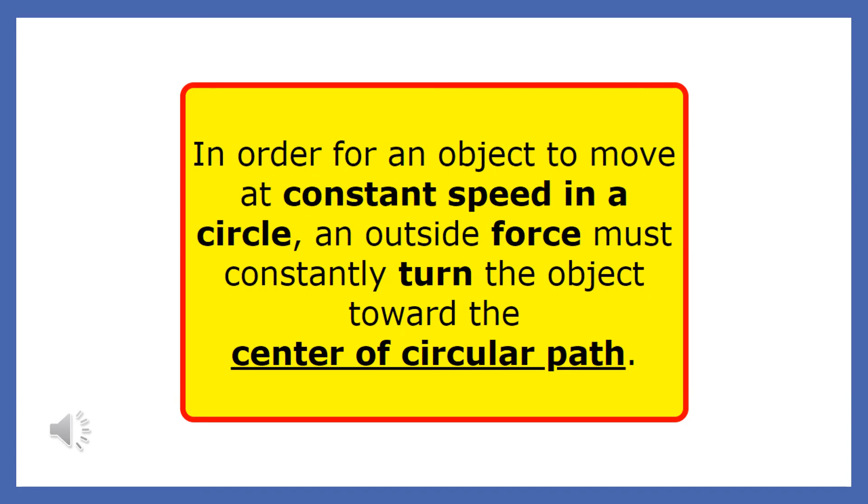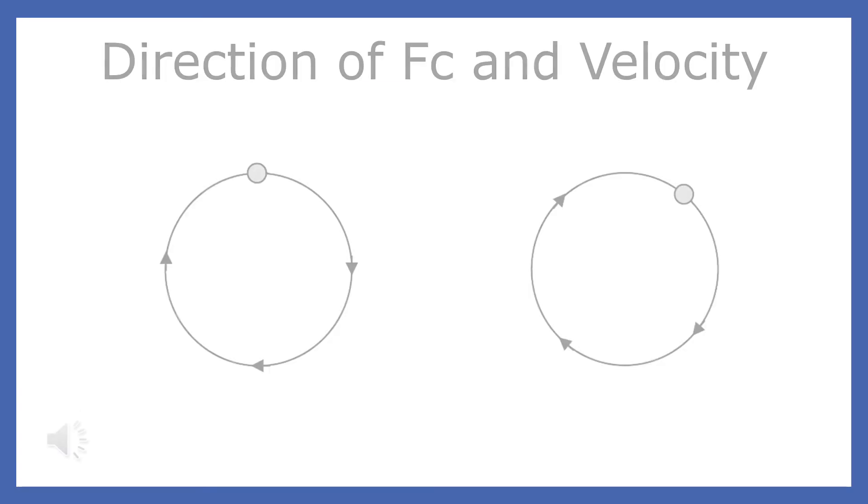Let's review a key point. In order for an object to move at constant speed in a circle, an outside force must constantly turn the object towards the center of the circle. This force is called a centripetal force. Whenever we draw the centripetal force and the velocity, we always draw the centripetal force first, then draw the velocity perpendicular to that force.